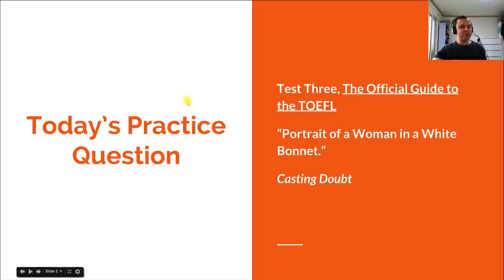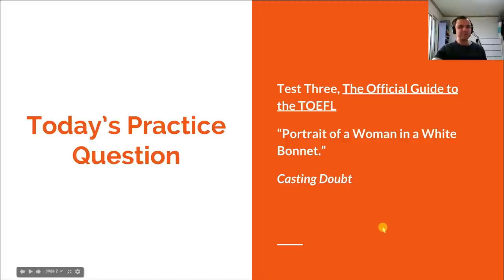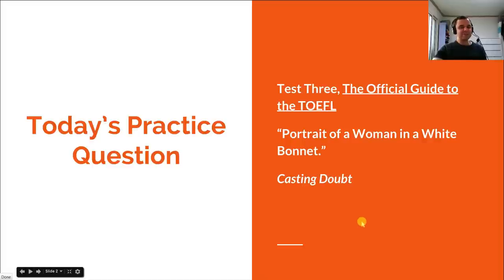The practice question we're going to be using today is from Practice Test 3 in the Official Guide to the TOEFL from ETS. It's the question about the portrait of a woman in a white bonnet, which is a casting-doubt type question. ETS owns the lecture and reading, so I can't publish them, but the official guide is easy to find online or in your bookstore. You really don't need the book — this video is meant to show you how to structure and organize your essay no matter what the question is. The strategies work for every TOEFL integrated essay.